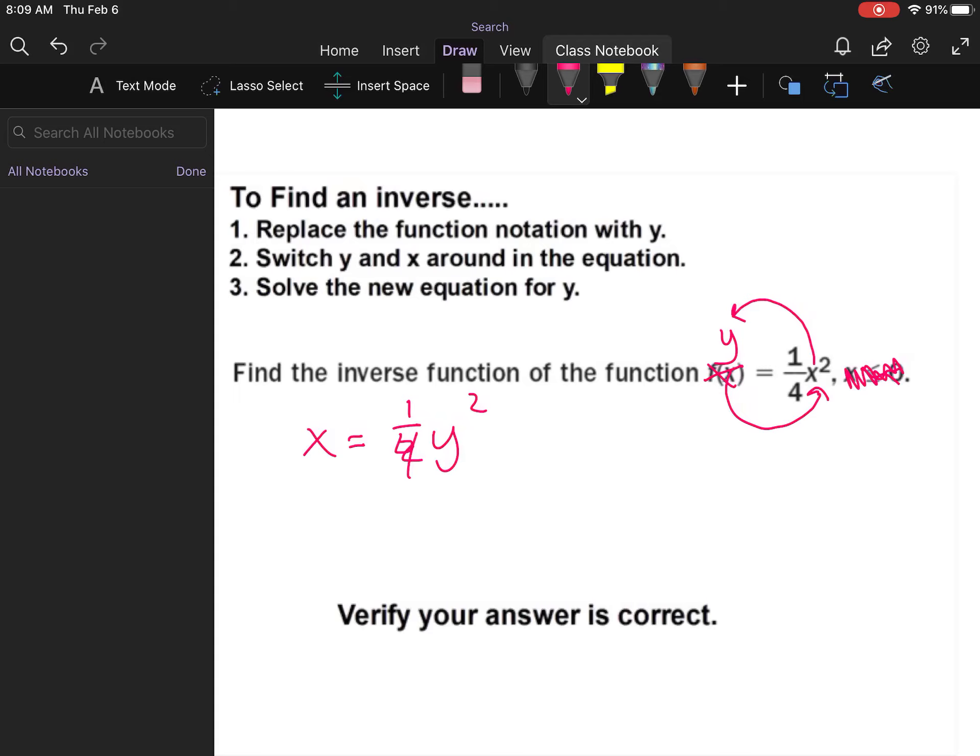And now I'm going to solve to find my new equation for y. So the inverse of one fourth is to multiply by 4, and the inverse of squaring is to take the square root. And I end up with 2 square root of x equals y. And again, it makes sense because to square something, square root is its inverse. The inverse of division or fraction multiplication is multiplication.